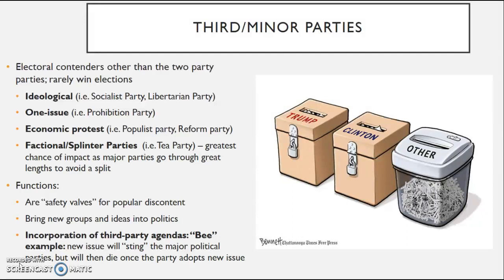Some of the major functions of third parties are that they serve as safety valves for popular discontent. When the two parties are not doing a good job, a third political party forms, bringing new groups and ideas into politics. The problem is the bee analogy: like a yellow jacket, when it stings you it hurts — and third parties hurt the two parties by bringing in new, innovative ideas. However, just like that bee, it dies once it loses its stinger, because the two parties absorb that issue. And thus people gravitate away from the third party, which is why third parties do not make much of an impact in terms of representation in politics today.